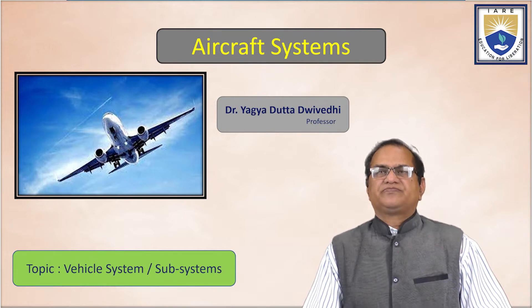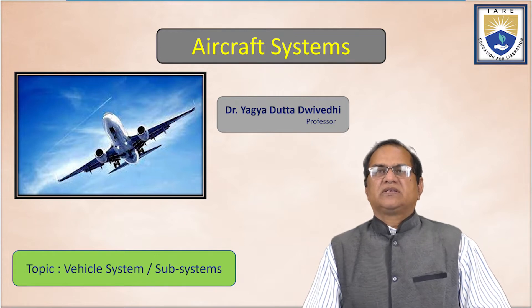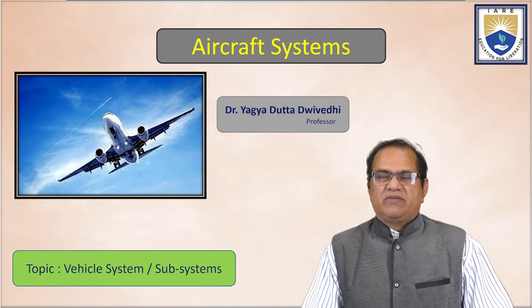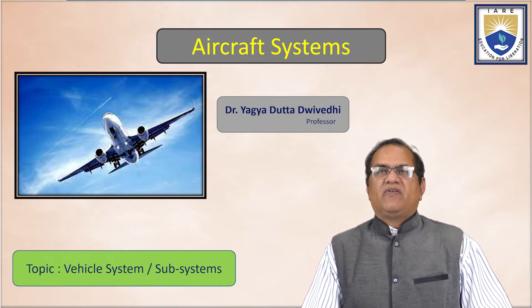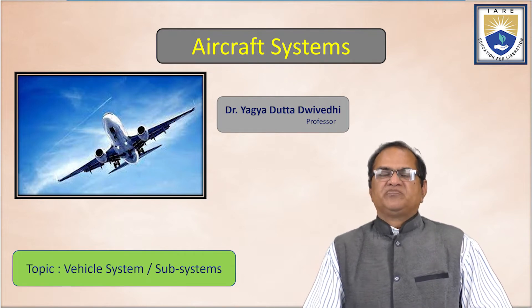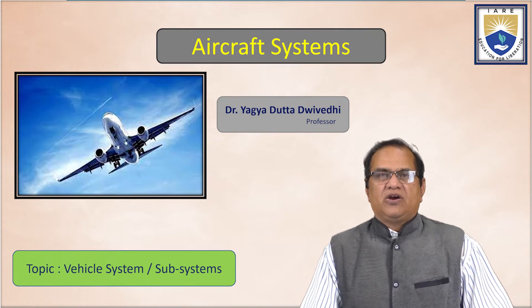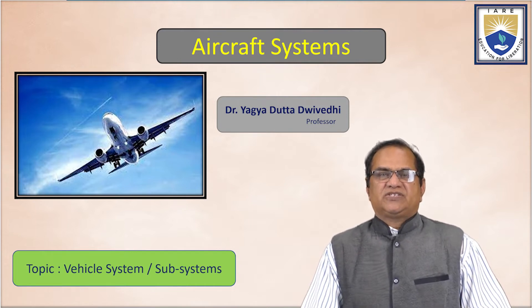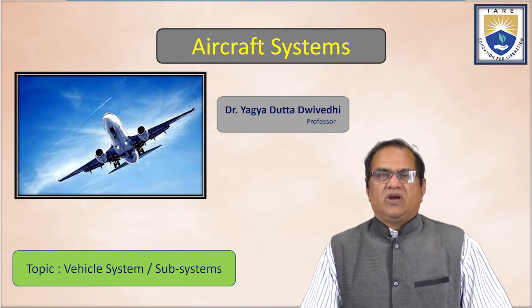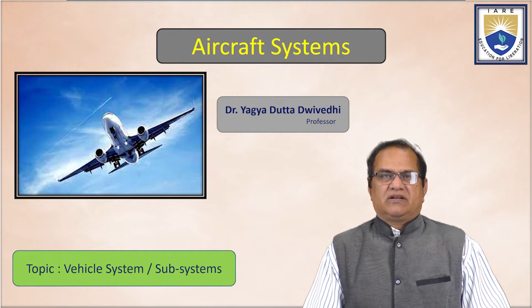I have started this course a few days back and we have divided it into four verticals. The first vertical was the airframe or structural system, and the second vertical is the vehicle system and subsystems. In the structural systems, I explained that there are three major systems. The primary major structural system is the wing, which consists of longerons, spars, stringers, skins, airfoil shapes, and other small components.